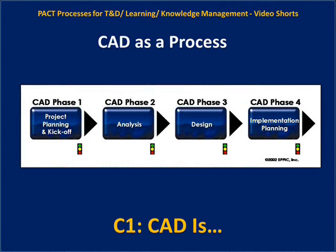CAD is both a product and a process. The processes of CAD include four phases of a typical project: Phase 1, project planning and kickoff; Phase 2, analysis; Phase 3, design; and Phase 4, implementation planning.